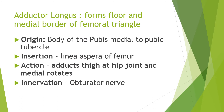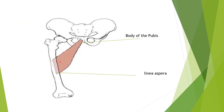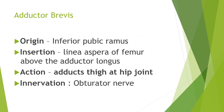Adductor longus forms the floor and medial boundary of the femoral triangle. It originates from the body of the pubis medial to the pubic tubercle and is inserted on the linea aspera of the femur. It causes adduction at the hip joint and also medial rotation of the thigh at the hip joint, and it is innervated by the obturator nerve. Adductor brevis originates from the inferior pubic ramus and is inserted on the linea aspera of the femur above the adductor longus. It adducts the thigh at the hip joint and is innervated by the obturator nerve.